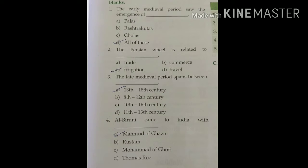Let's start the exercises. Exercise A: choose the correct answer and fill in the blanks. First question: the early middle period saw the emergence of — Palas, Rashtrakutas, Cholas, or all of these? The answer is all of these. The Persian wheel is related to — trade, commerce, irrigation, or travel? The answer is irrigation. The late middle period spans between — the answer is 13th to 18th century. Al-Biruni came to India with — the answer is Mohammed of Ghazni.